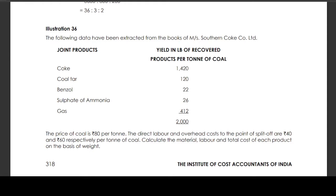For coke it is 1420, coal tar is 120, benzoyl is 22, sulphate of ammonia 26, gas 412 — total 2000 per ton of coal. The price of coal is 80 rupees per ton.